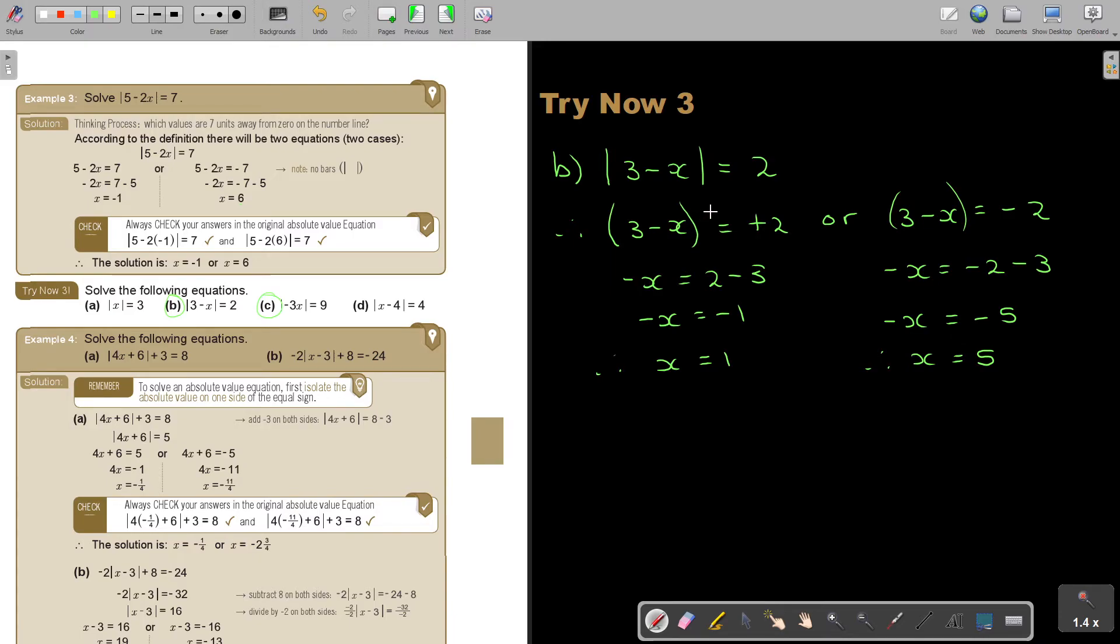If you check it in the original, if I put in 1, so 3 - 1 = 2, that will work. And if I put in 5, that's 3 - 5 = -2, and then it will become positive 2. So both solutions will work. Therefore, X = 1 or X = 5.